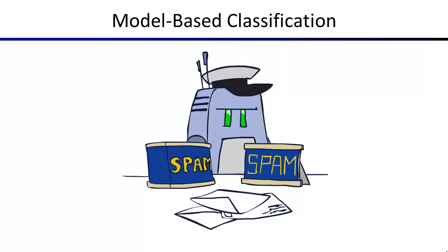In model-based classification, somebody hands you a data set, you know the features for each instance, and you want to build a function that maps features to outputs that generalizes well to new data. Today we'll do this in a model-based way using Bayes nets. An approach called Naive Bayes is still really the workhorse for classification — it's what people build in the real world despite years of research on alternatives that are slightly better on some axes.